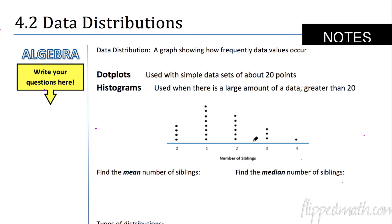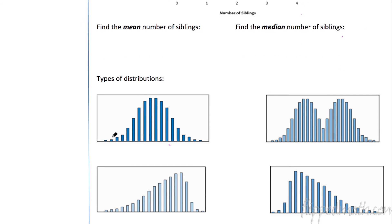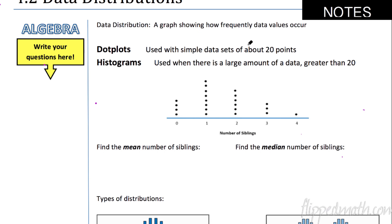There are two ways we're going to look at it today. A dot plot, which is used with data sets of about 20 or less — around 15 to 25 values. Or if there's too much data and too many values, we use a histogram, where we group them together and they make these bar things. It tells you how much or a proportion of how much.